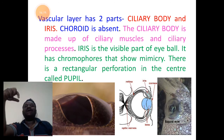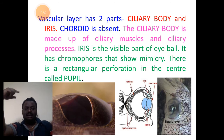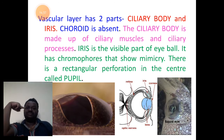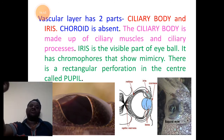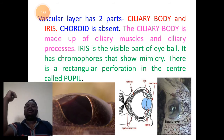Iris has pigmented cells called chromophores in the case of the iris of cephalopod. It shows mimicry with the skin. There are rectangular perforations at the center of the eye called the pupil. Students remember: the choroid structure is absent here.